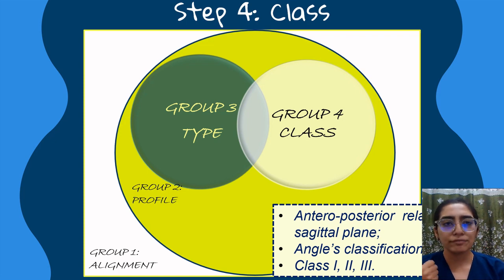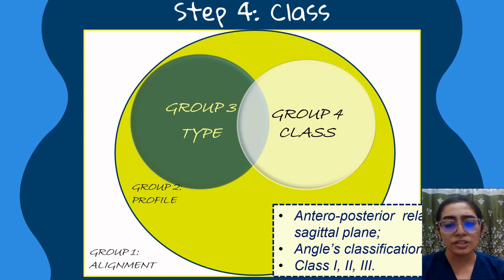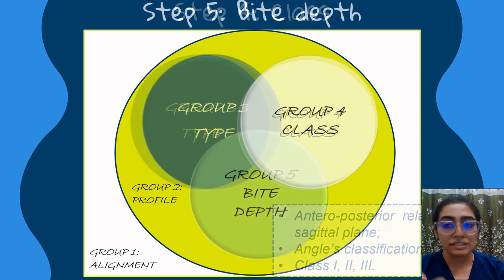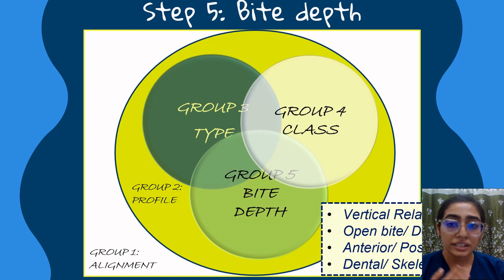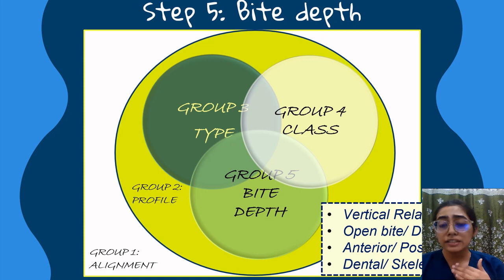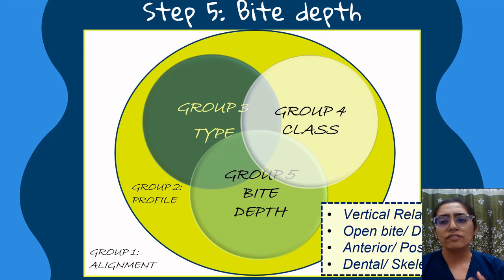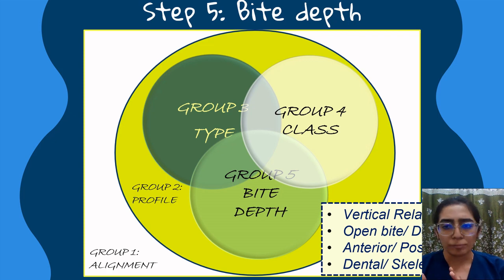In step five, the vertical dimension — also termed the bite depth — is described. The dentition can have an open bite or a deep bite, which may be anterior or posterior, and may have a dental or skeletal underlying component.